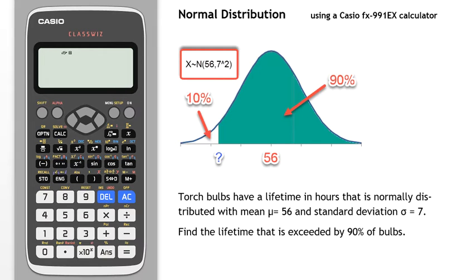Torch bulbs have a lifetime in hours that is normally distributed with mean mu equals 56 and standard deviation sigma equals 7. Find the lifetime that is exceeded by 90% of bulbs.